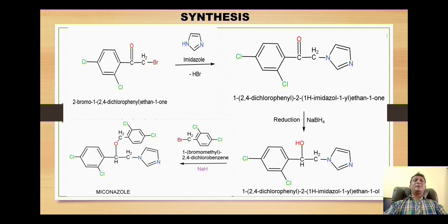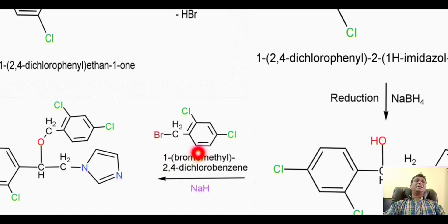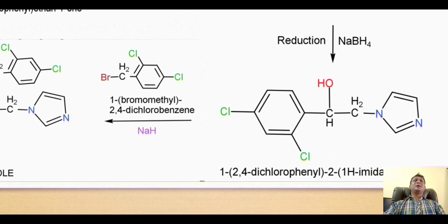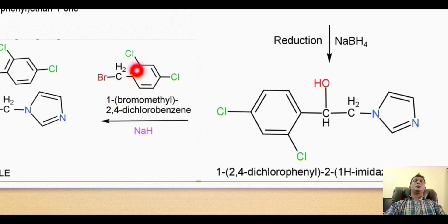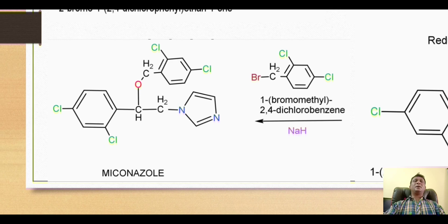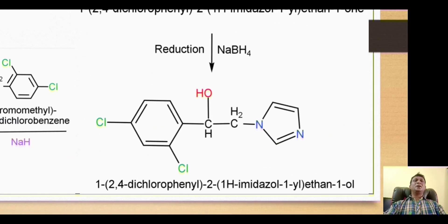Then in the last step, it is reacted with a dialkyl halide called 2,4-dichlorophenyl methyl bromide. In IUPAC nomenclature, it is 1-bromomethyl-2,4-dichlorobenzene. The reaction takes place in the presence of sodium hydride (NaH). Now this hydroxy group is nucleophilic in nature. This nucleophile attacks on this carbon to bring about the nucleophilic substitution reaction, thus liberating one HBr molecule. There is attachment of this particular group onto the oxygen, which gives us the formation of our final compound, myconazole.